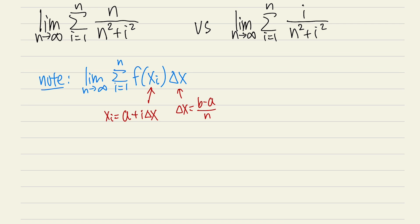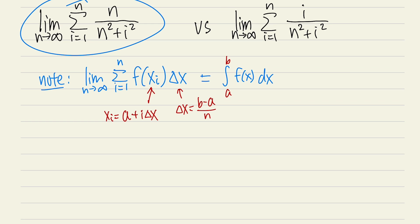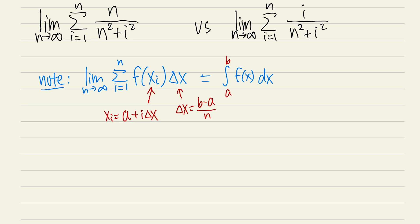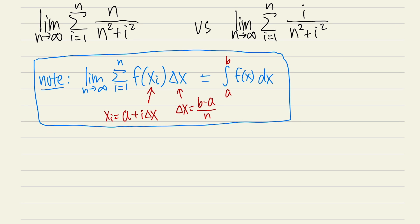This translates to a definite integral going from a to b — that's what the a and b are for — of f of x dx, where dx is like the super version of the width of the rectangle. So as long as we can convert these limit of Riemann sum expressions to integrals, we'll be able to calculate them. That's the strategy — keep this in mind.